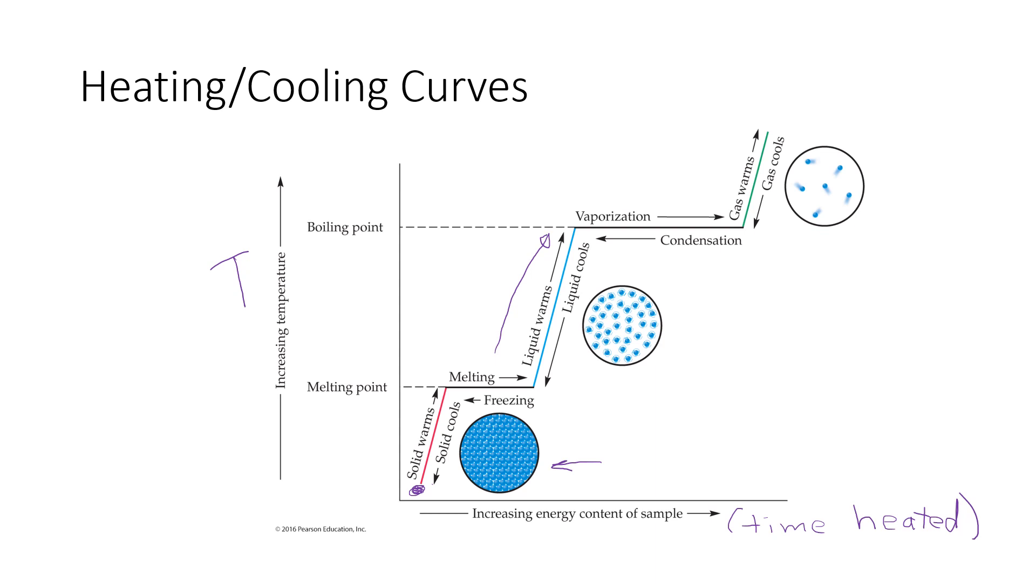And at the boiling point, once again, we hit this constant temperature where we're adding heat. And every bit of that added heat goes into the phase transition. It goes into changing the liquid into a gas. So all of that extra energy is going into separating the particles from one another and giving them enough kinetic energy to turn into a gas.